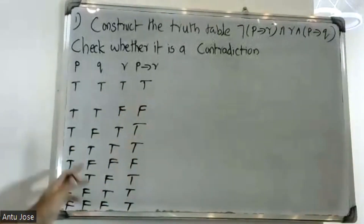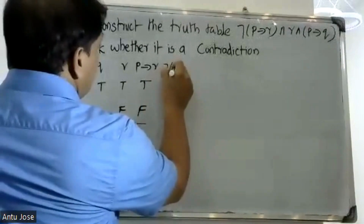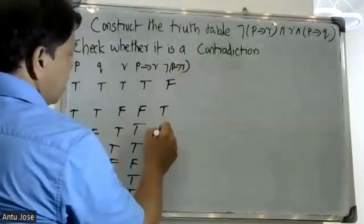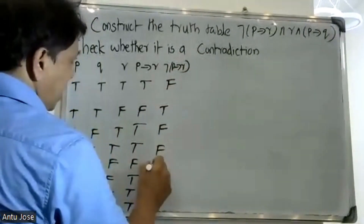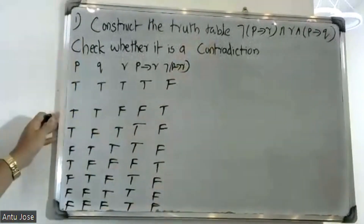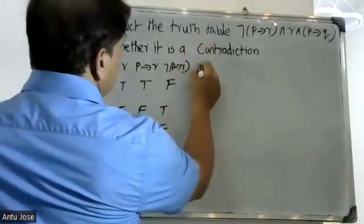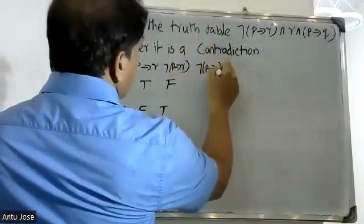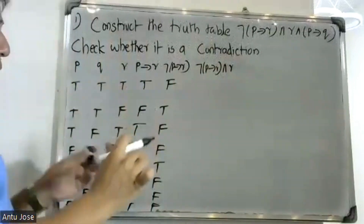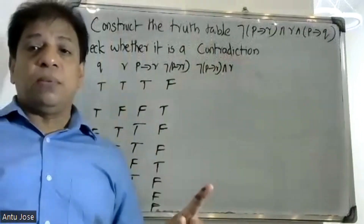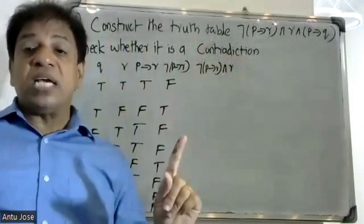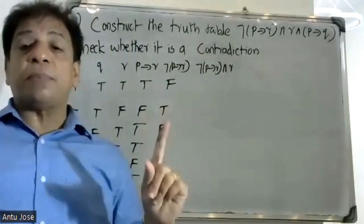This is a negation. The negative condition — negation of p conditional r, and e equal. Only one case it will be true; all other cases to be false.